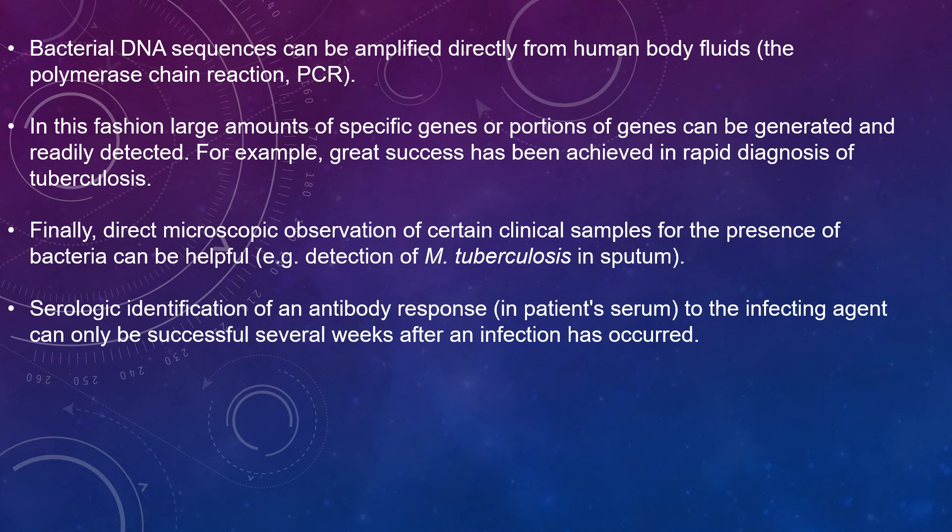Bacterial DNA sequences can be amplified directly from human body fluids by PCR — polymerase chain reaction. In this fashion, large amounts of specific genes or portions of genes can be generated and readily detected. For example, great success has been achieved in rapid diagnosis of tuberculosis. Direct microscopic observation of clinical samples for the presence of bacteria can also be helpful — for example, detection of Mycobacterium tuberculosis in sputum samples.